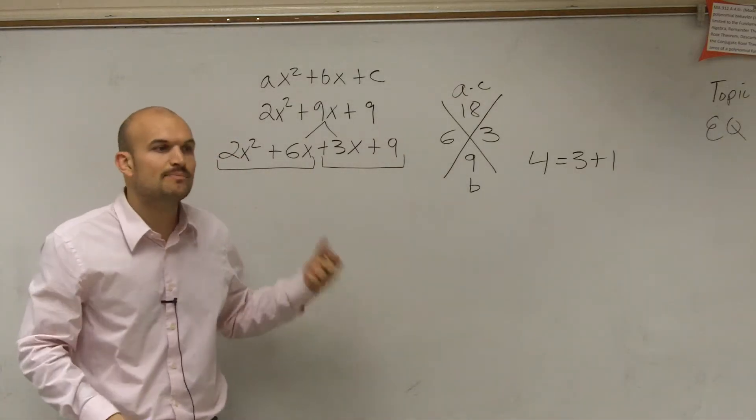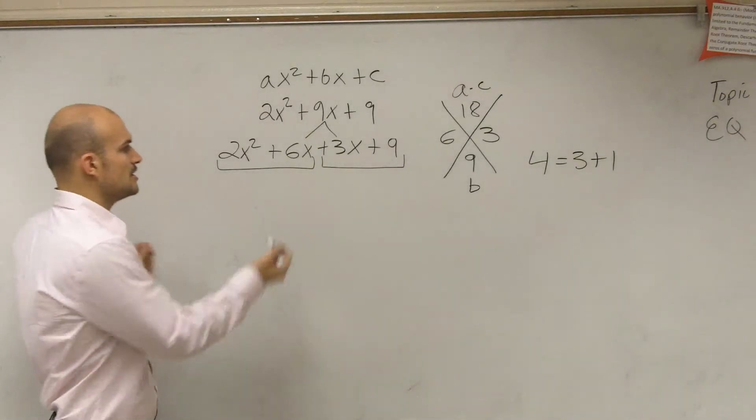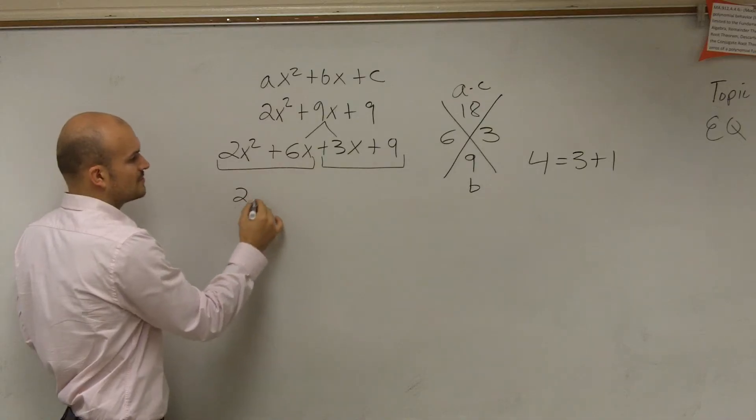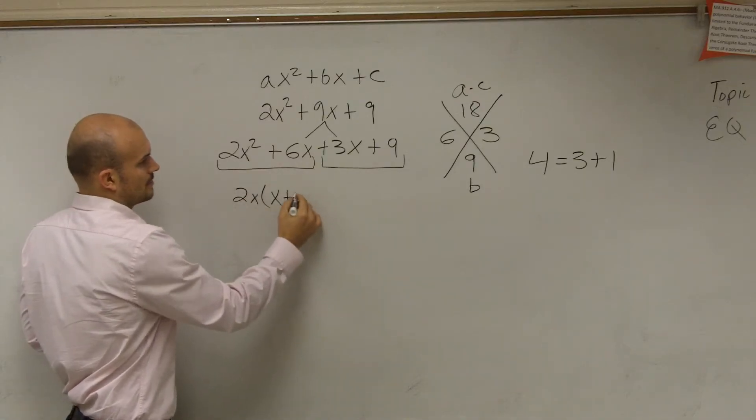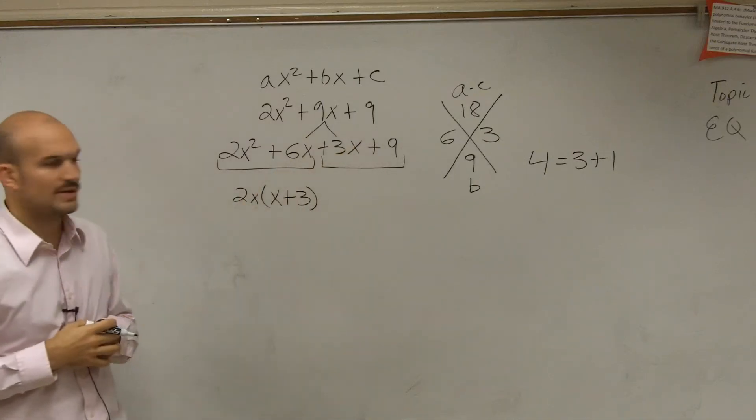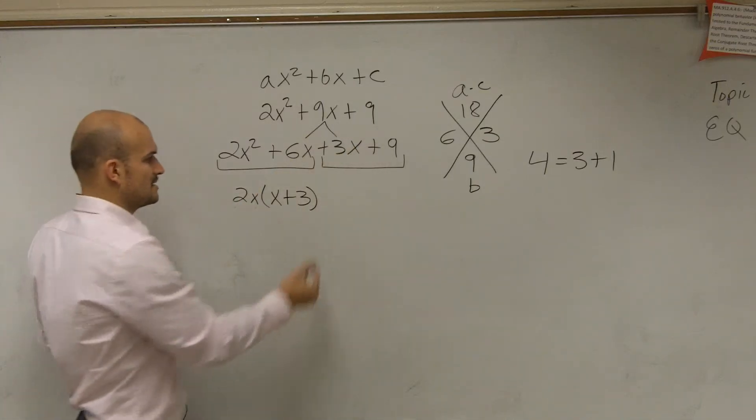Then we factor each one of those individually. So by factoring them, we pull out the GCF. So I say, what is the GCF of 2x plus 6x? It's going to be a positive 2x. Then, what's the GCF of 3x and 9? It's a positive 3.